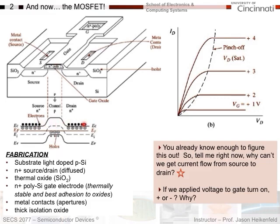The operation is actually a little more complicated, which we'll cover in lecture. But this is the first-order principle. Here's a drain current versus drain voltage plot for several gate voltages. A little positive voltage shifts the bands down a bit, you get some current. More positive voltage further reduces the barrier for electron flow and you get more current. Notice the current saturates — just like JFETs and BJTs, we run into this saturation current effect.